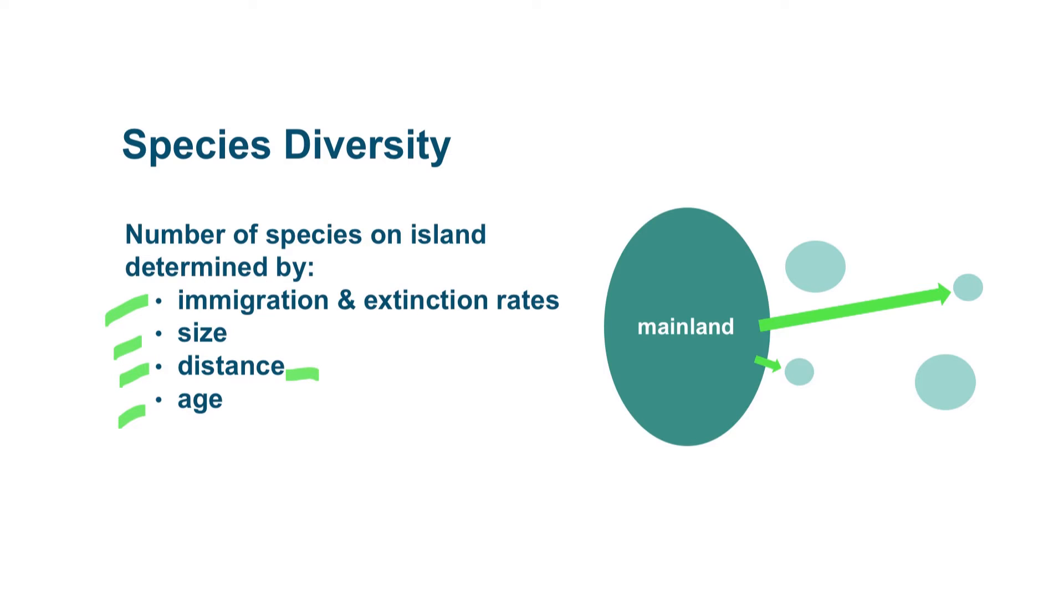When we talk about distance, we're talking about distance from the mainland. For instance, this island is closer to the mainland than this island is.